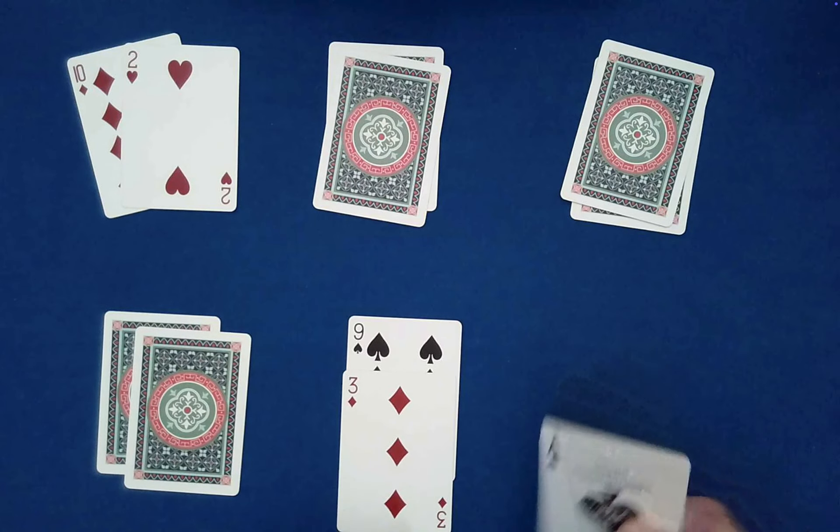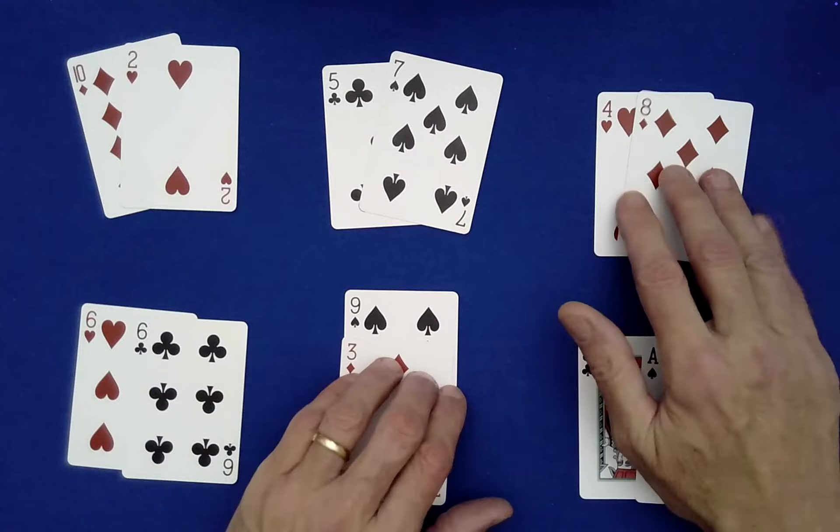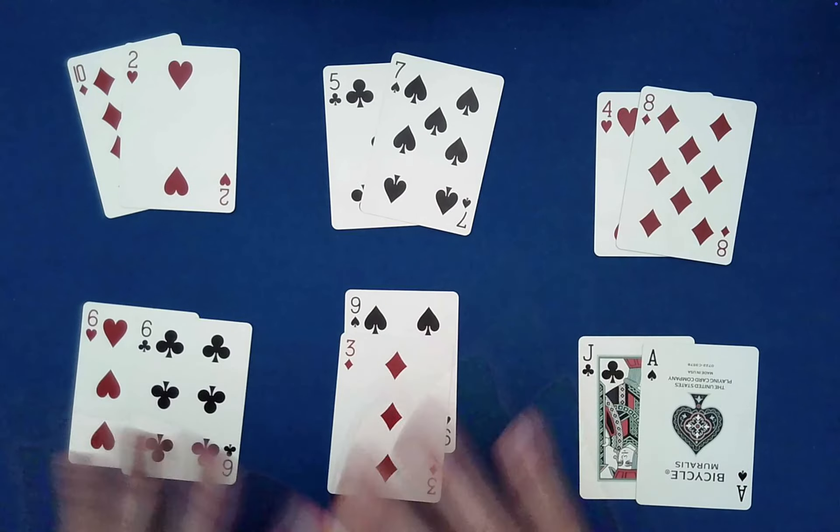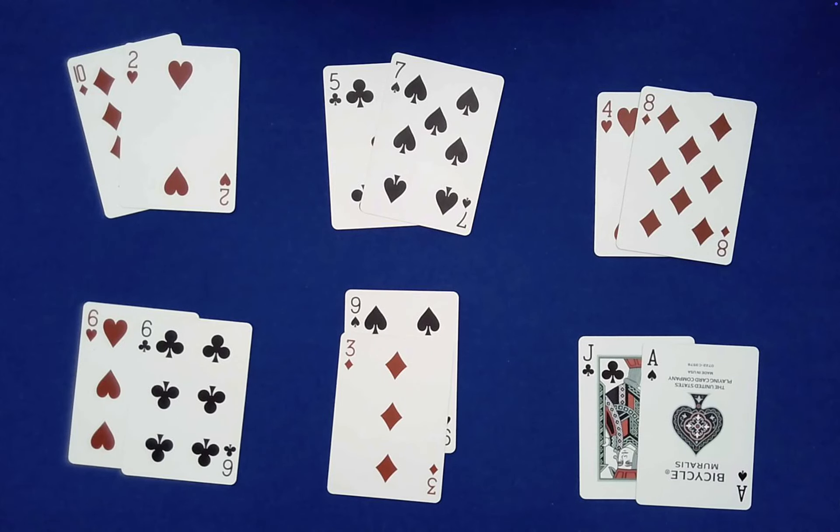Okay, now note to you as the performer, you can have these cards add up to whatever you want. So you could have them all add up to 13, or 15, or any number that you can reach with card values between Ace and 13.